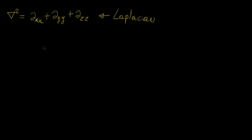In this video we're going to be talking about another type of operator that is commonly found in vector calculus, and it is called the Laplacian operator. Basically what it means is that you have this nabla operator, or del operator, and it looks like it's squared — but it's not actually squared — it simply means that you have the second derivative of some scalar function.